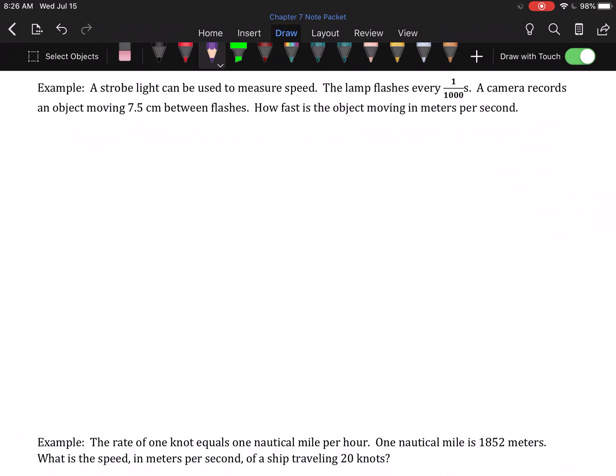A strobe light can be used to measure speed. The lamp flashes every 1,000th of a second. A camera records an object moving 7.5 centimeters between flashes. How fast is this object moving in meters per second? So what we're told is that it moves 7.5 centimeters in one flash. Each flash is 1,000th of a second. I'm going to rewrite 1,000th as the decimal version 0.001, and I'm only doing that because it's going to be easier to deal with in the long run than having multiple fractions. So this is what we know. We're asked, how fast is it moving in meters per second? Well, I have seconds, so I've only got to change centimeters to meters.